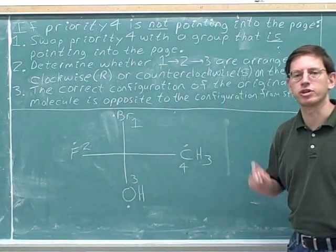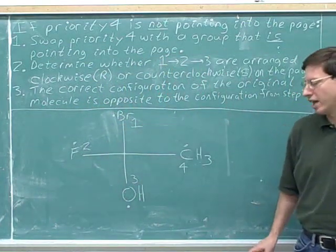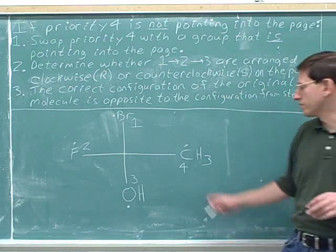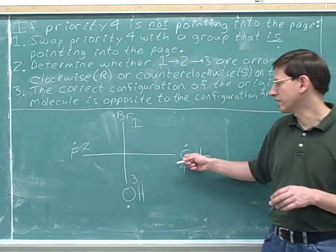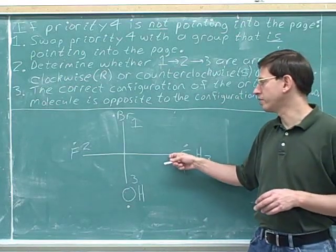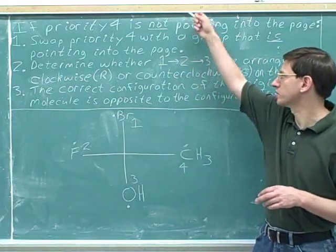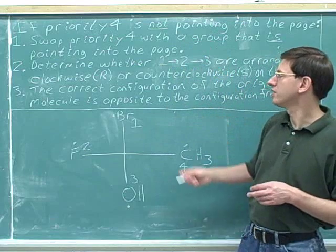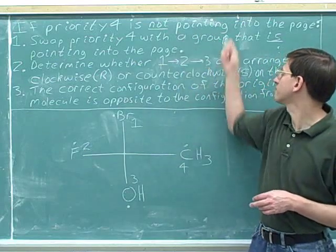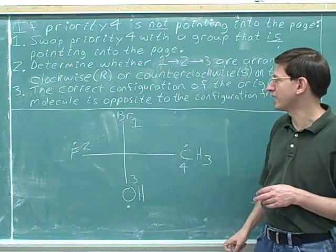Now we have to determine whether we're in case one or case two. The number four priority is on the horizontal bow tie pointing towards us, so we're in case two. The number four is not pointing into the page.